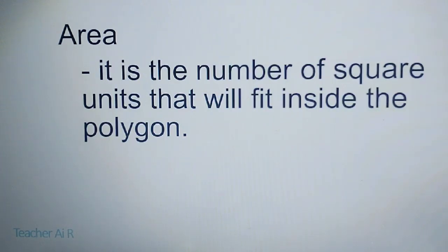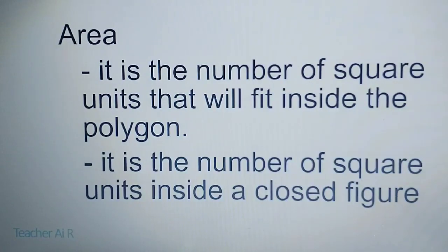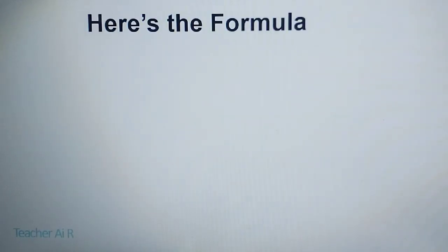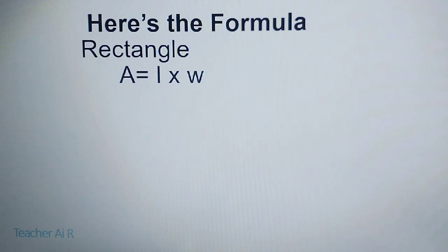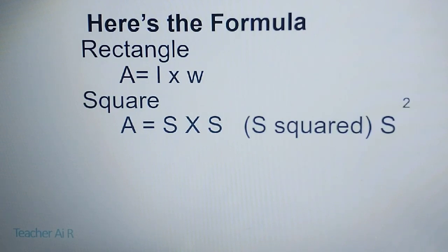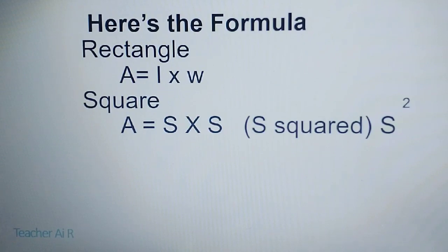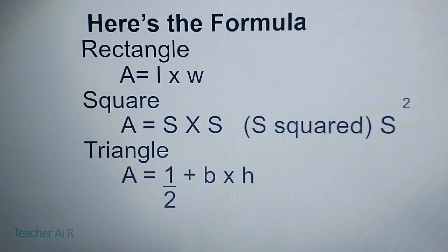Now let's have area. When we say area, it is the number of square units that will fit inside the polygon, or the number of square units inside a closed figure. Here are the formulas: for rectangle, area equals length times width; for square, area equals S times S, or S squared; and for triangle, area equals one-half times base times height.